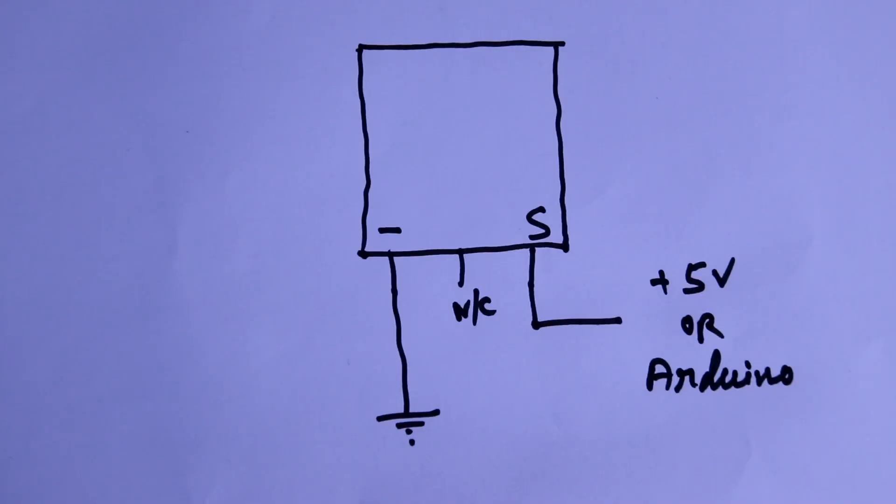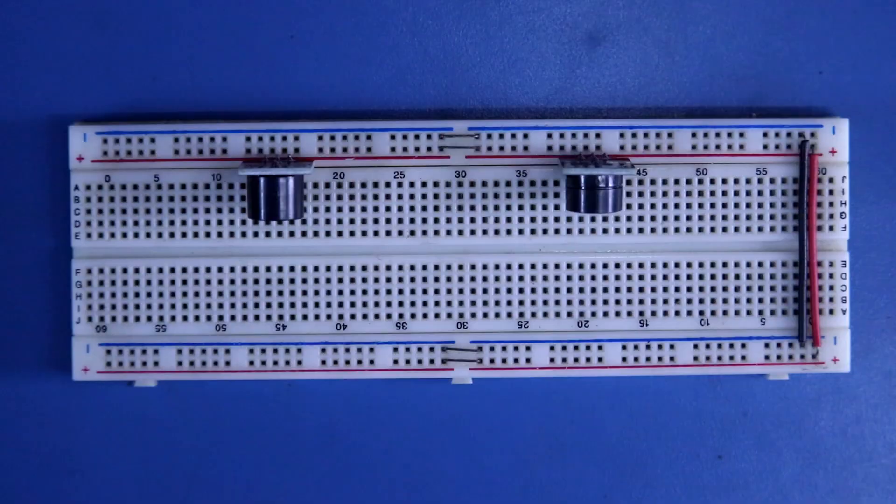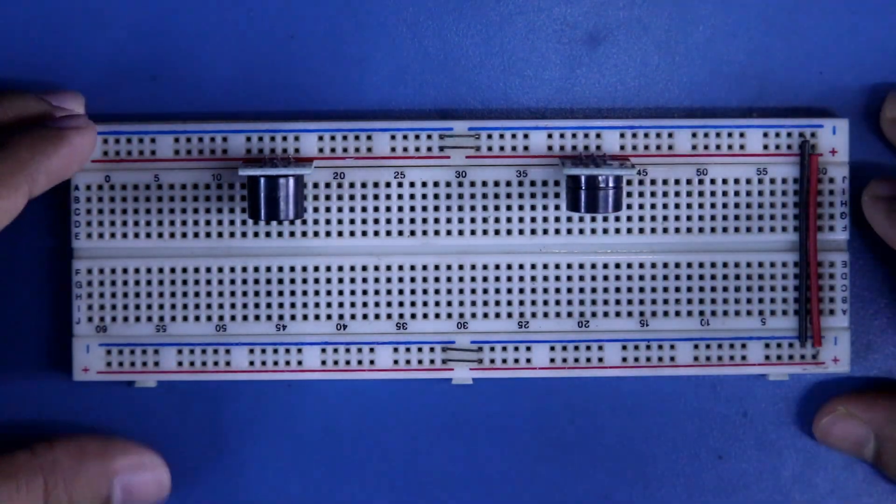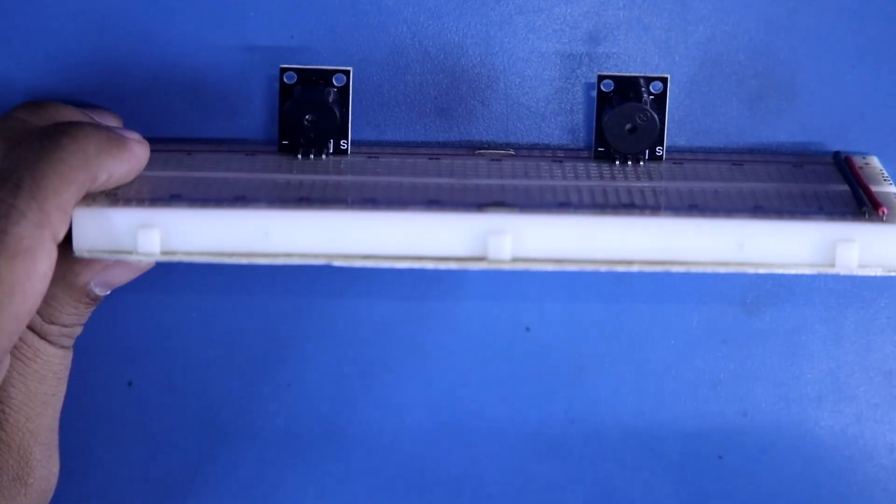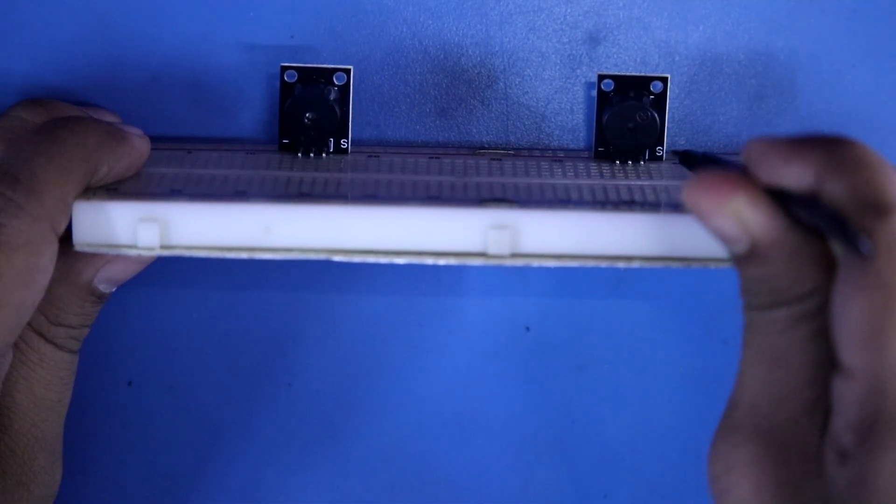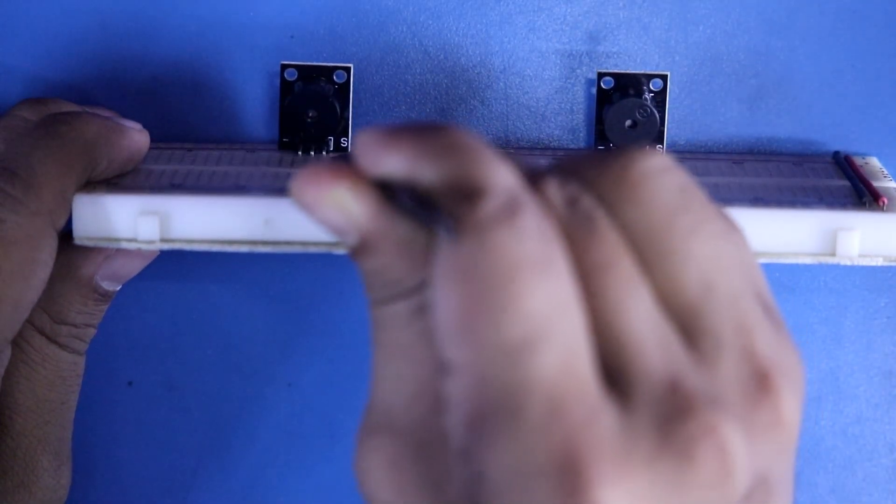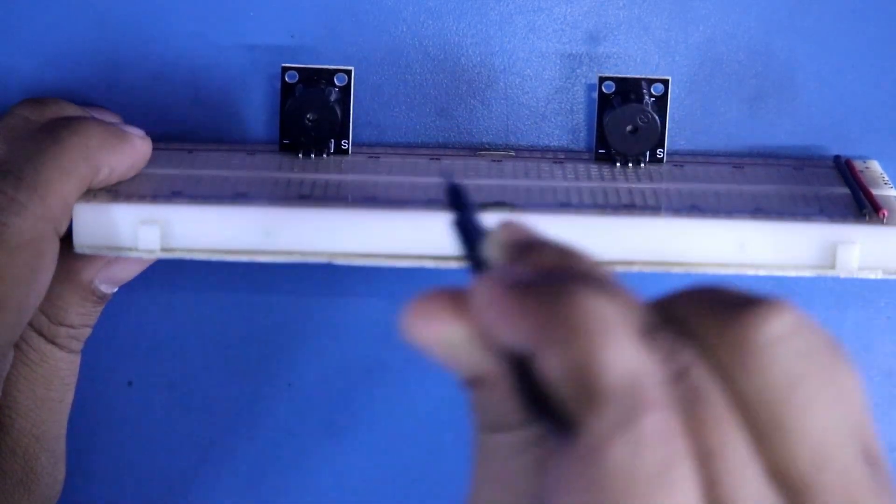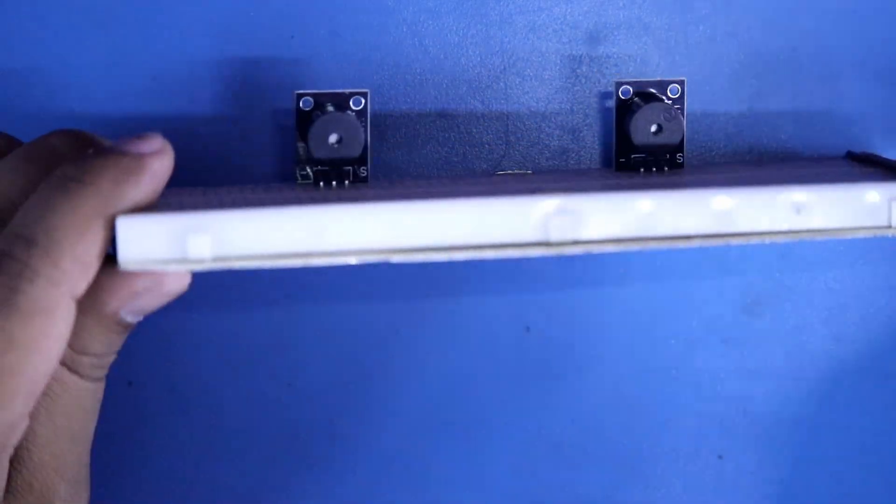Now we will see both of them on practical. I have put both of them on breadboard. As you can see, the right pin is S for both of them and the left pin is ground, the negative pin.